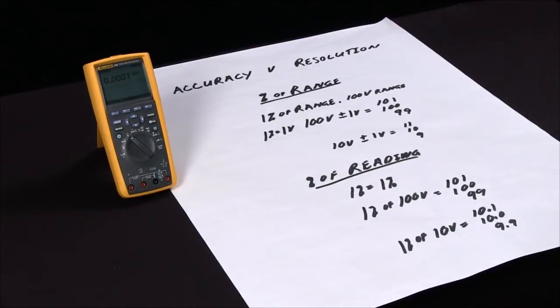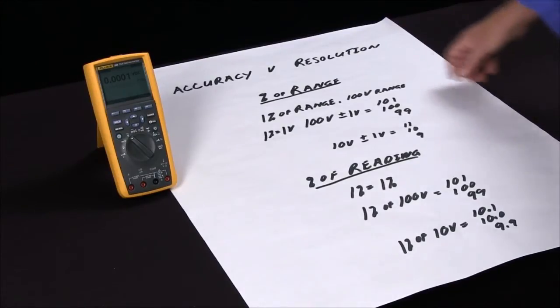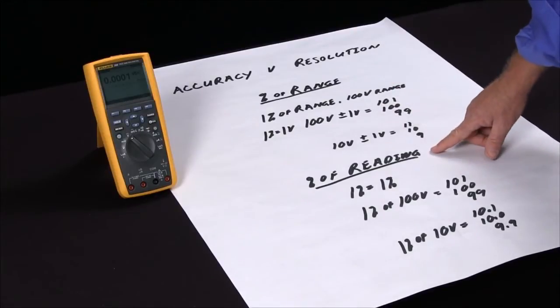So there are two ways we have accuracy specified: one is in percent of range, and one is in percent of reading.